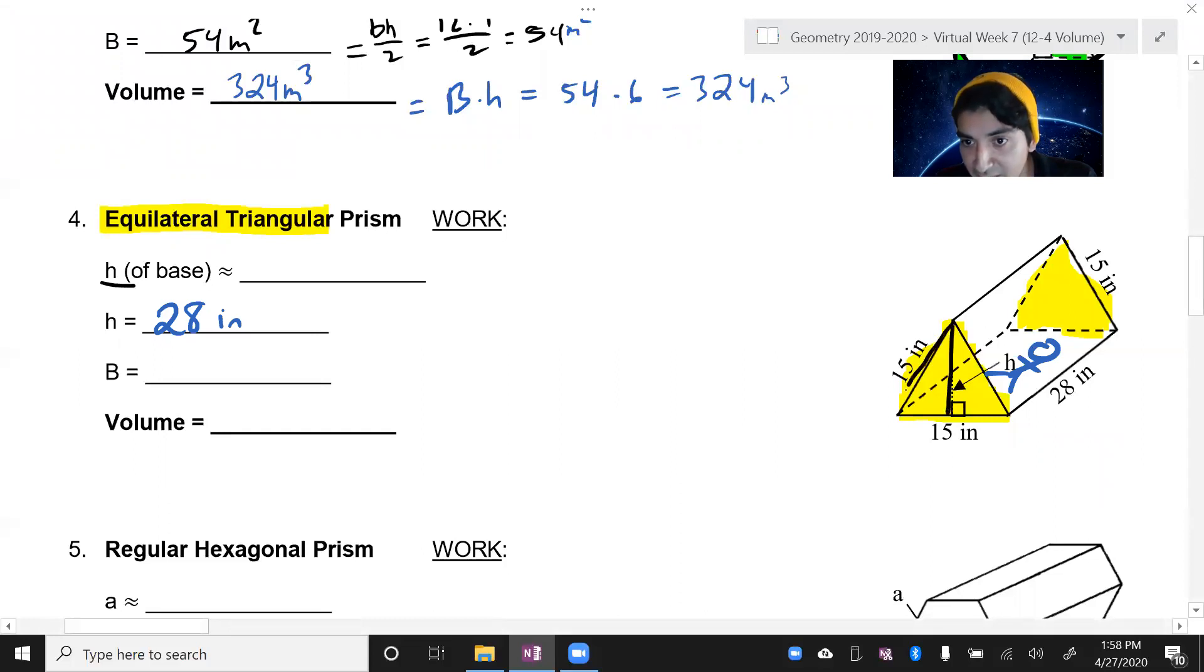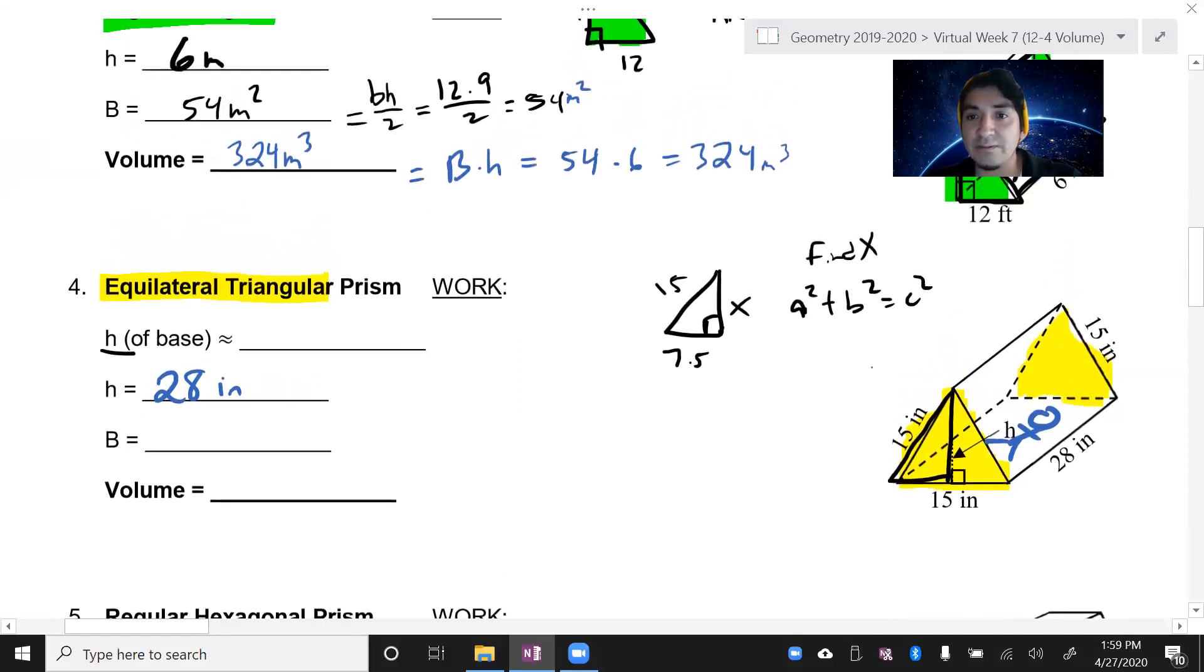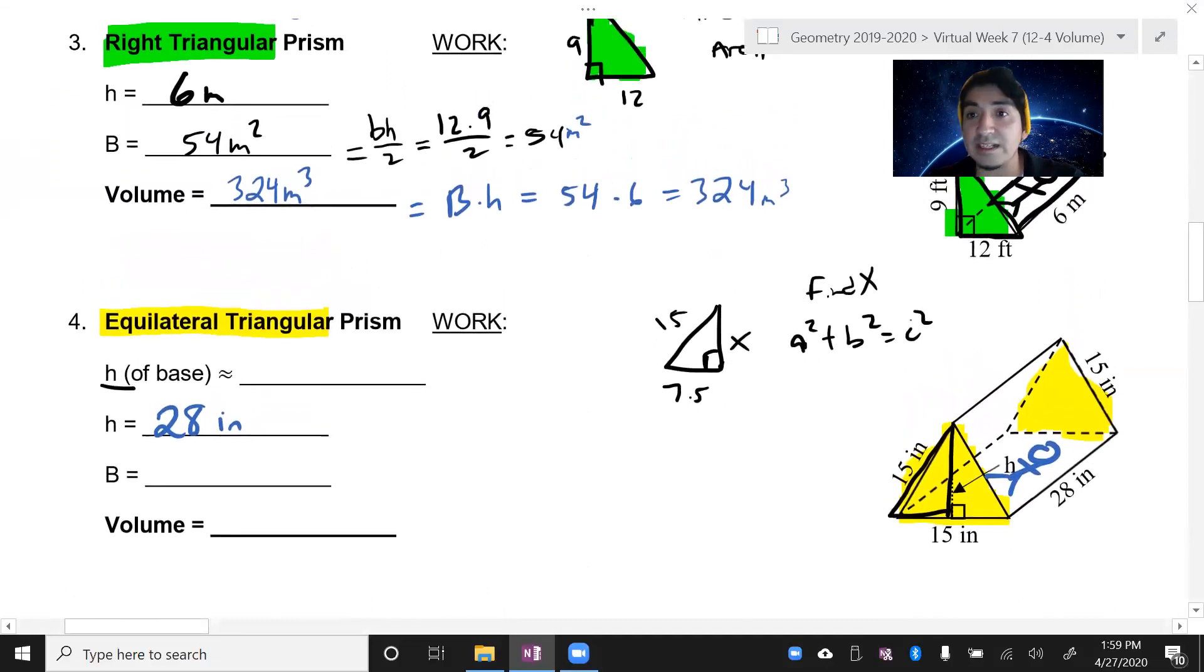You've got to use the Pythagorean theorem to find the height of this line. So you have to use the Pythagorean theorem. Cut that 15 in half, you get 7.5 to find that x. You have to use a squared plus b squared equals c squared to find x. So I'm going to throw a few points out there for you. Alright guys, so you're on your own to figure this out. Tune into the next video.